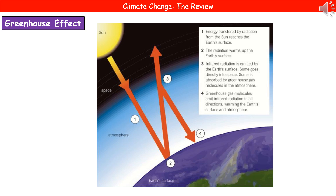The greenhouse gases are responsible for what's called the greenhouse effect. Our Sun transfers radiation through space and it reaches the Earth's surface. At that point the radiation warms up the Earth's surface and it will then emit infrared radiation, because all warm objects emit infrared radiation. Some of that infrared radiation goes straight back into space and is lost, but some is absorbed by the greenhouse gas molecules present within our atmosphere.